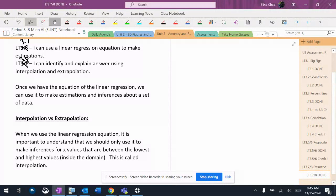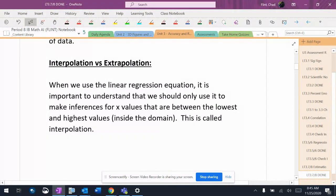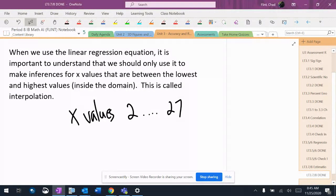The most important thing to remember is that you are only supposed to use a linear regression equation for the data set that you have information for. Meaning if your x values start at 2 and go up and they end at 27, you would only want to use that regression equation for numbers from 2 to 27, not outside of it. This is called interpolation.